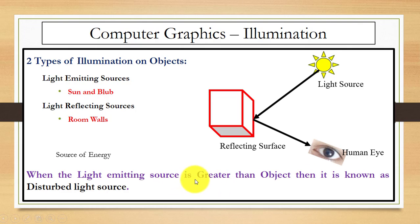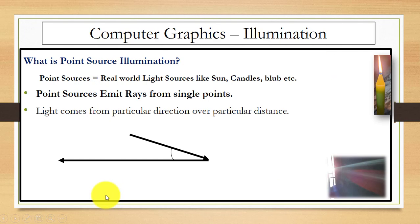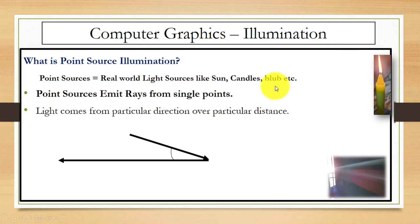If the light emitting source is greater than the object, this is known as a distributed light source, also known as a point source. What is point source illumination? Point sources mean real-life light sources that emit light, like the sun, candle light, and bulb. Point sources emit rays from a single point.